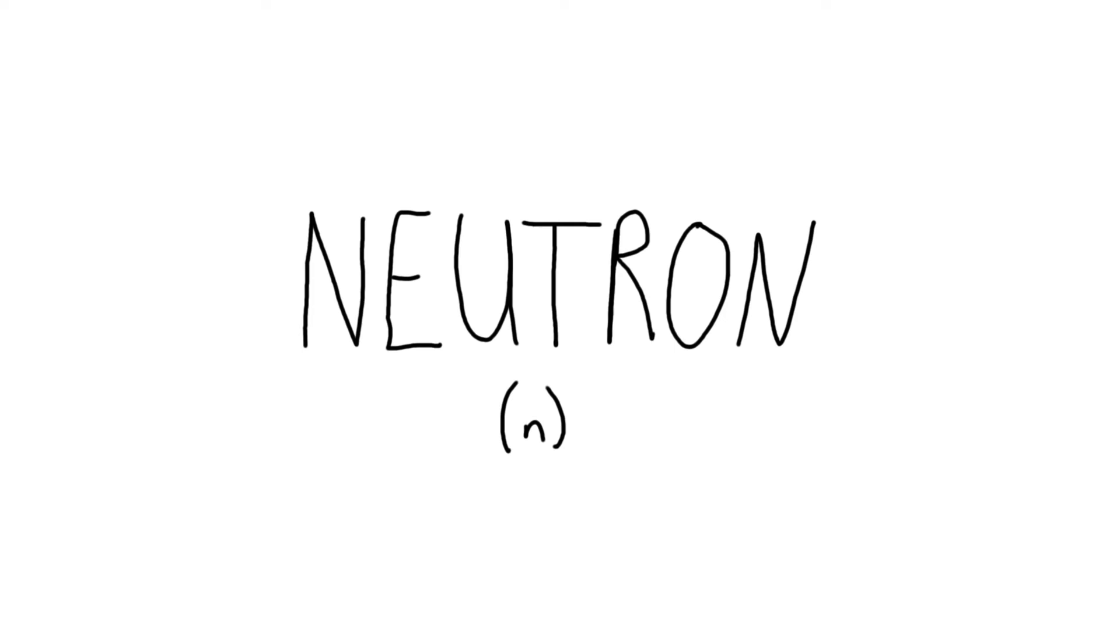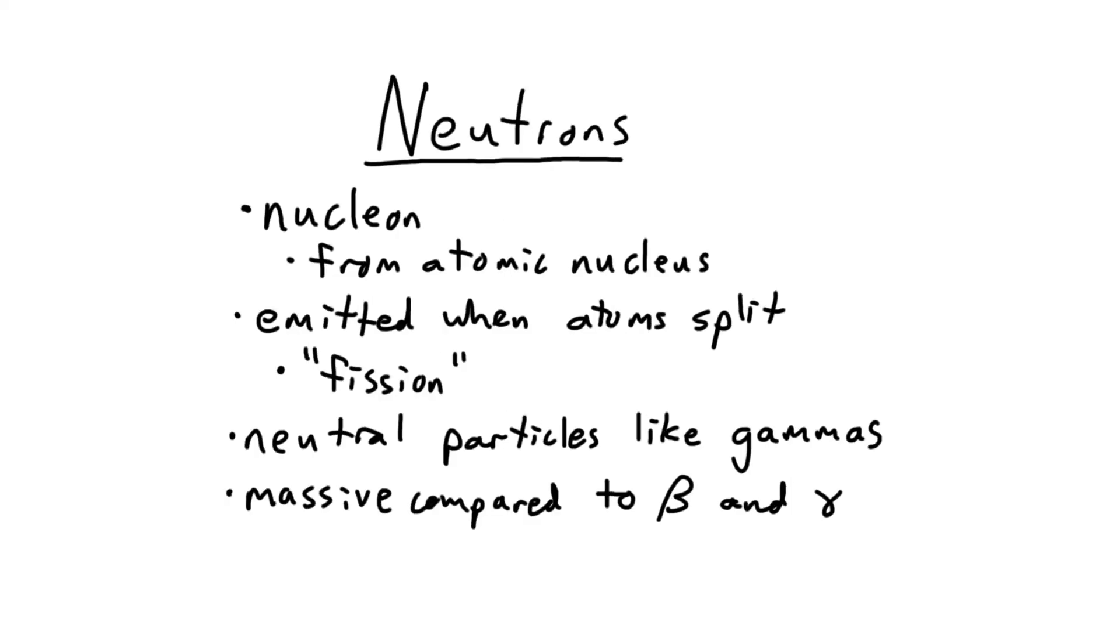Finally, last but not least, the neutron. As discussed in my atom video, a neutron is a nucleon, which means it's from the nucleus of an atom. Neutrons are emitted when atoms fission or split, but that's a topic for another video.